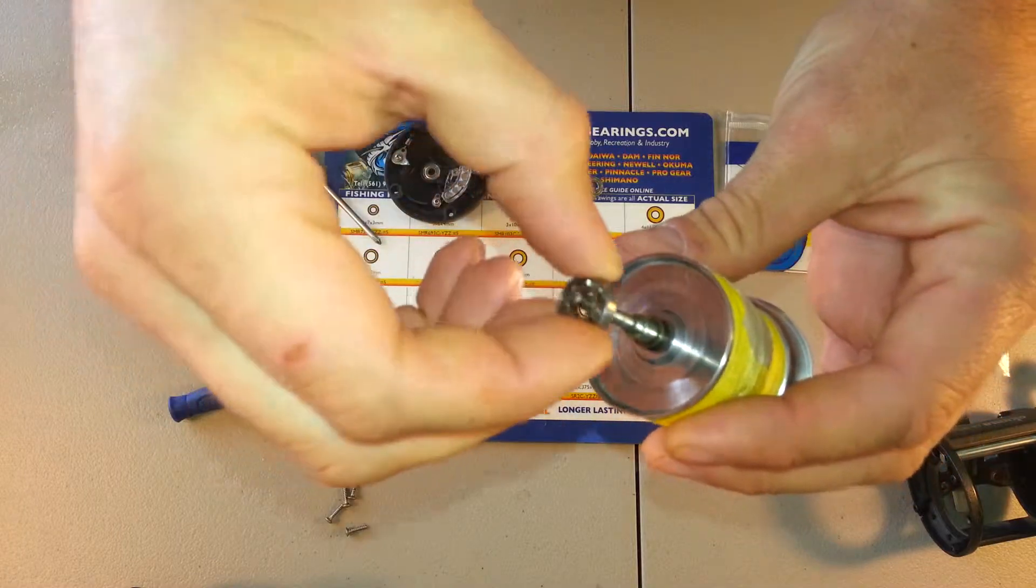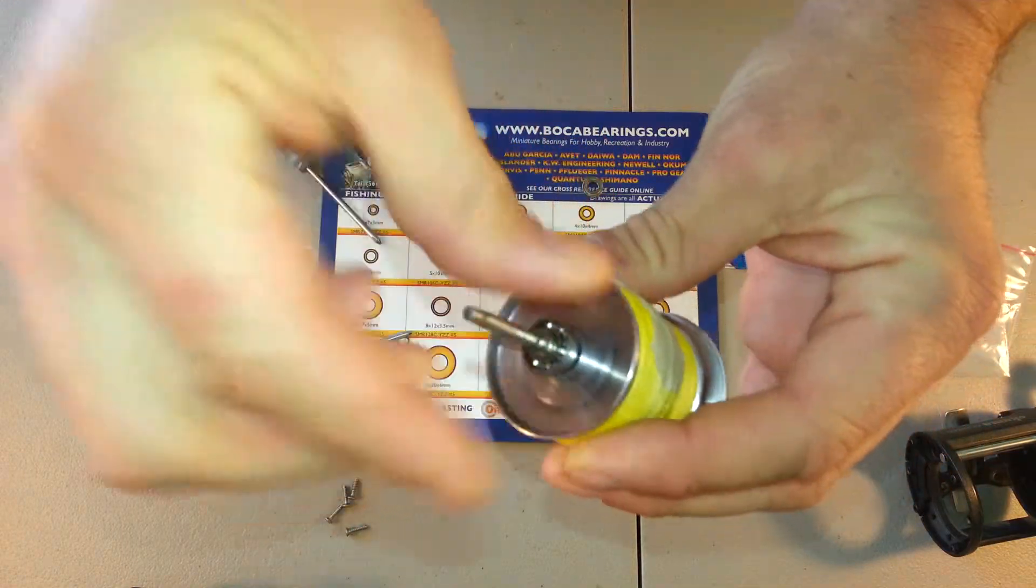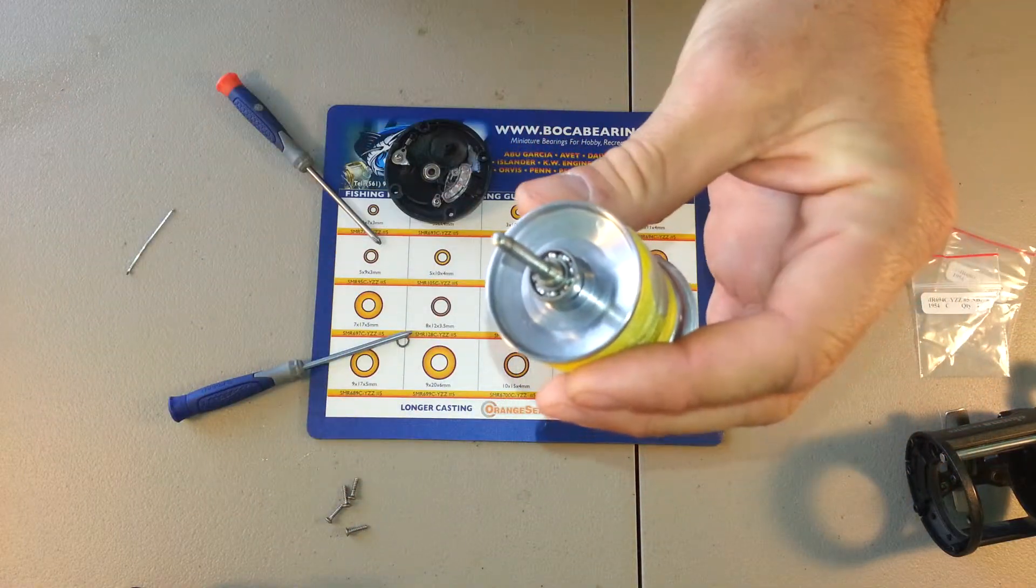Get your replacement Boca bearing and slide it right on, and put the C-clip back on.